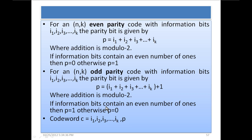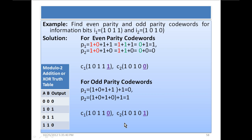The result of p depends on the number of ones in the information bits. The codeword is constructed by writing the information bits as they were and appending the parity bit. For example, find the even parity and odd parity codewords for information bits i1 = 1011 and i2 = 1010. For even parity codewords, p1 corresponds to i1 = 1011.